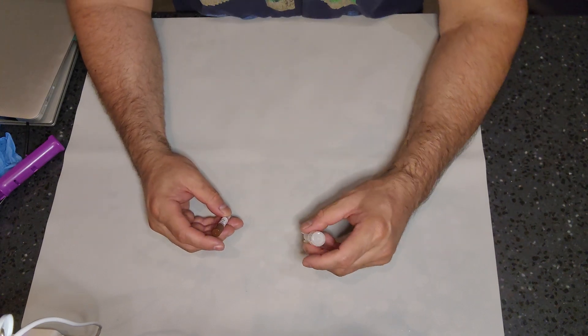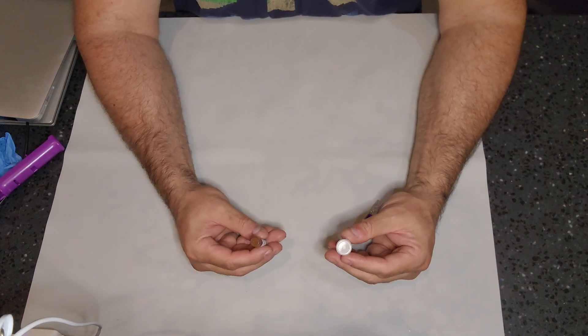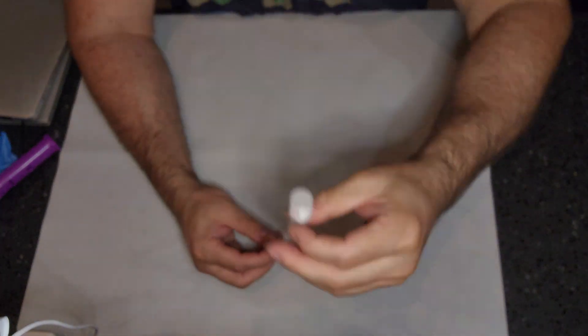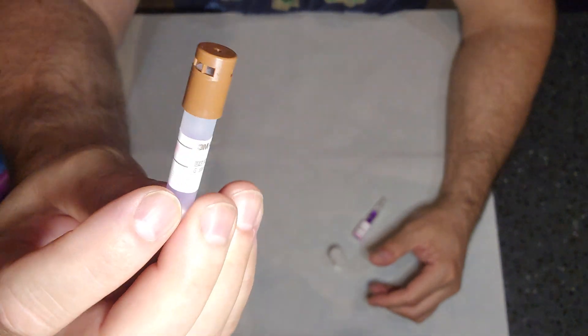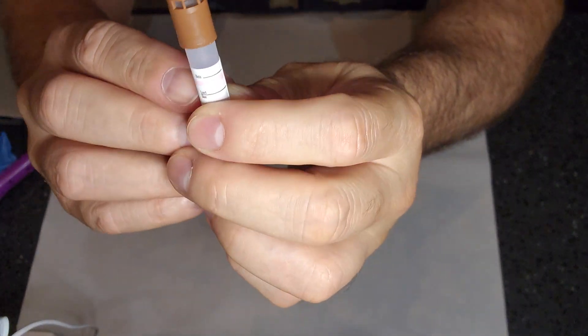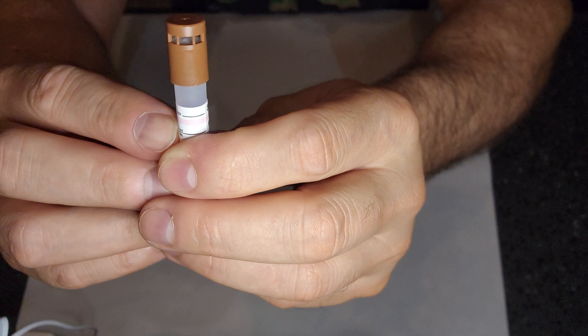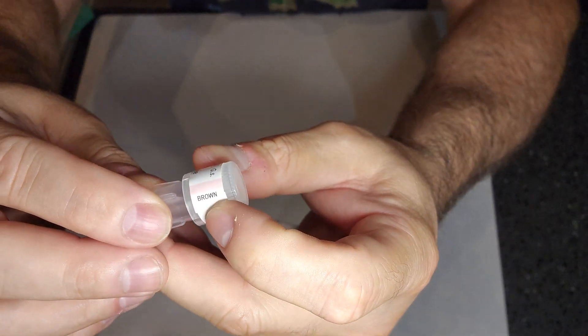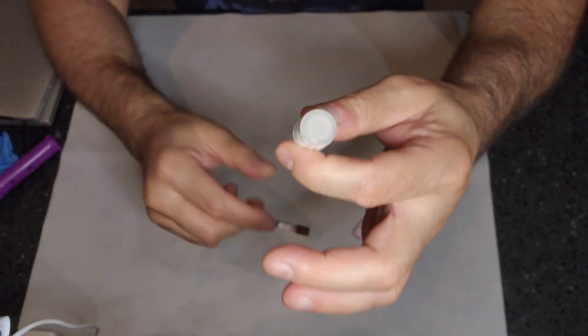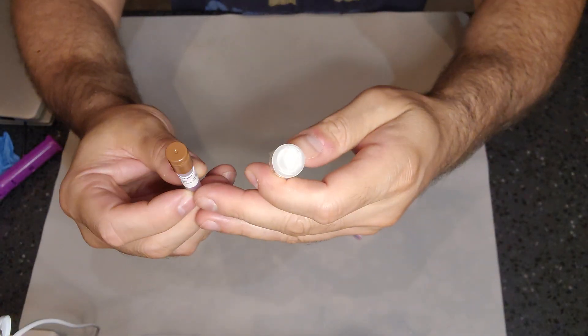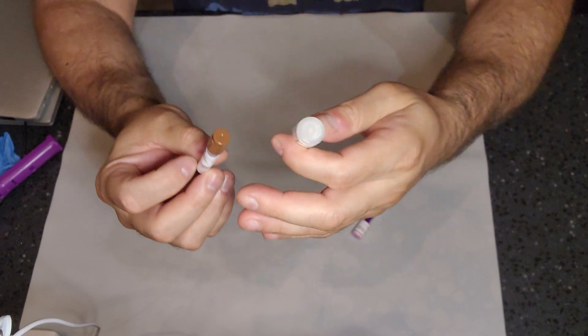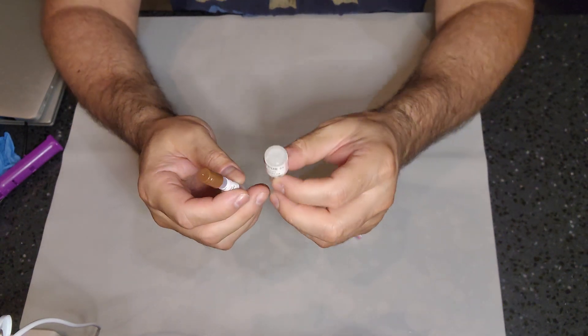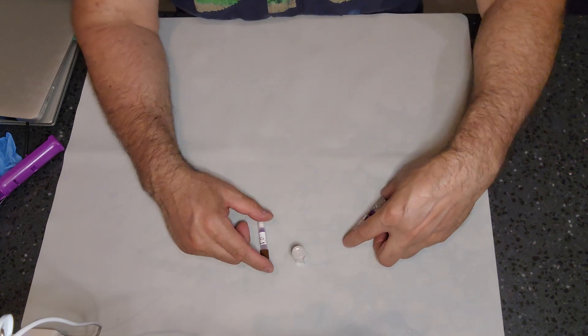All three of these biologicals have the same information on either the cap or on the base. And there is a type 1 indicator you can see right around the base there, and the type 1 indicator on this is right here on the side. It lets you know what color it should change. These two here are used for steam sterilization, the same bacteria of choice, Geobacillus stearothermophilus. Same information on there. Let's talk about this anatomy again.